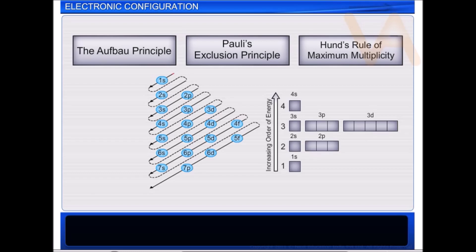The electronic configurations of atoms generally follow the three rules stated above for filling up electrons into various orbitals. For example, in potassium, the electrons enter into various orbitals as 1s2, 2s2, 2p6, 3s2, 3p6, and 4s1, in accordance with the Aufbau rule.